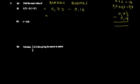2 minus 4 — you can't do that, so borrow 10, giving 12 minus 4 equals 8. Then in the tenths place, borrowing means it becomes 6 minus 1 (carried) minus 1 equals 5. So you get 0.58 as the answer.